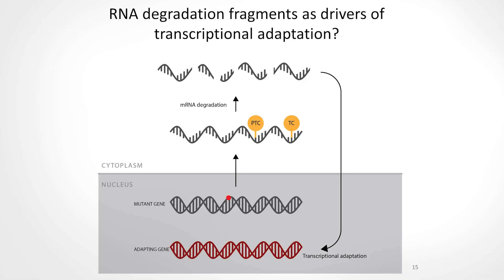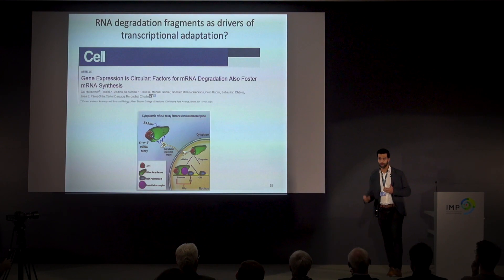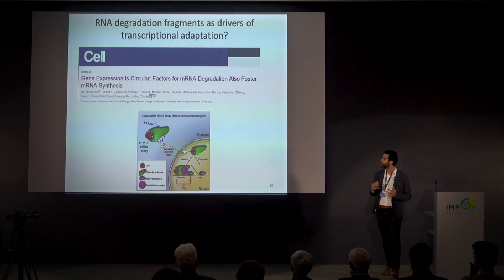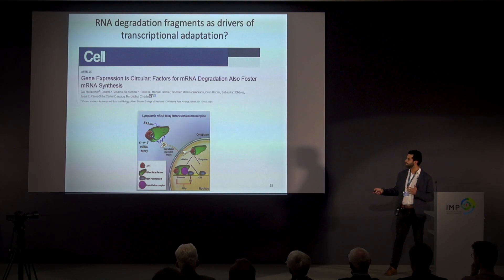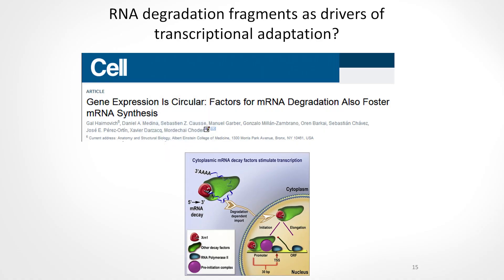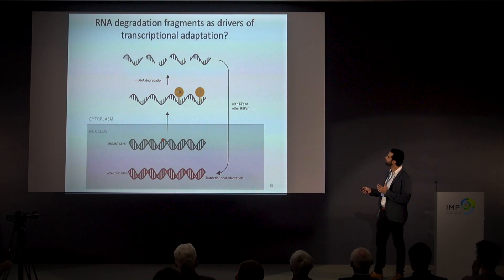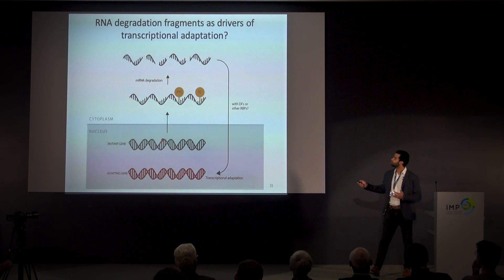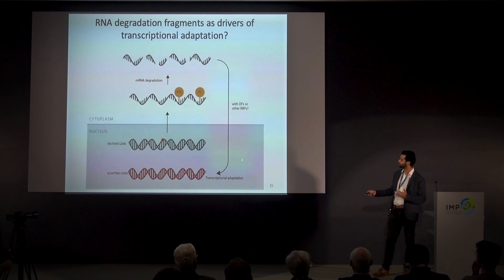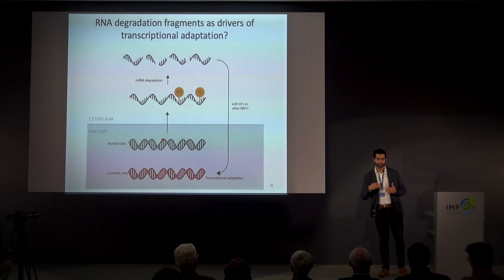At that stage, we had a model where a mutation leads to a mutant transcript that becomes degraded — but what we were missing is how we go from degradation to induction of those adapting genes. In the past decade, it has become more obvious that RNA decay and gene expression are coupled, where a number of studies have shown that following mRNA decay, certain decay factors can translocate back to the nucleus to induce gene expression through promoting transcription initiation and elongation. We thought this could be happening in our case — specifically, that mRNA decay intermediates would act like a guide RNA, bringing decay factors or RNA-binding proteins to specific genomic loci to induce gene expression.